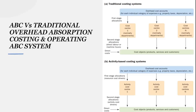The traditional overhead absorption costing systems, which are still widely used by companies, were developed in the early part of this century. The typical factory had these characteristics: direct costs were a high proportion of total costs, that is materials and labor; a relatively small number of support functions such as planning, purchasing, financial, and quality control; low overheads; low levels of mechanization; simple labor-based production; large runs of relatively standardized products; and a slow rate of change. Product costs were calculated by adding a proportion of overheads to direct costs, charged on a production volume-related basis, usually direct labor hours or machine hours.